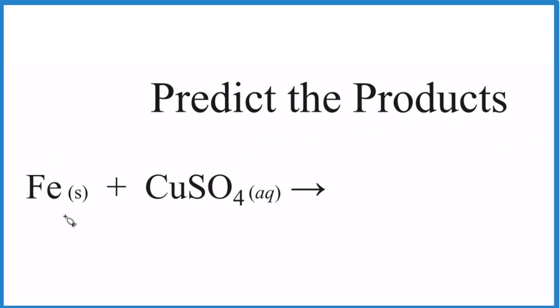Let's predict the products for the reaction of Fe plus CuSO4. That's iron plus copper 2 sulfate. So when we predict the products of a reaction, first thing to do is identify what type of reaction.